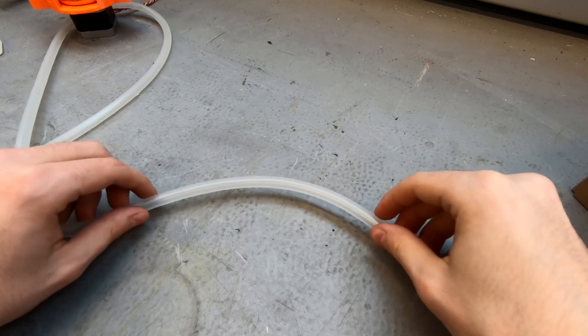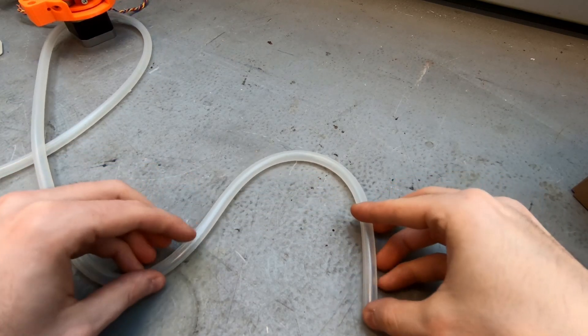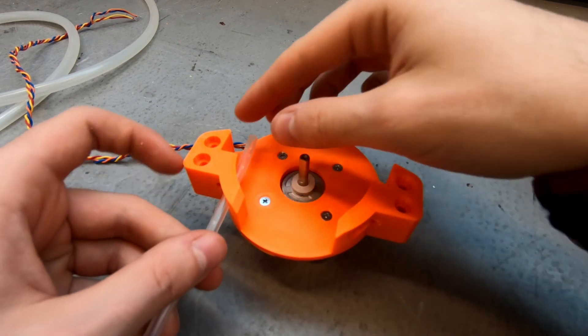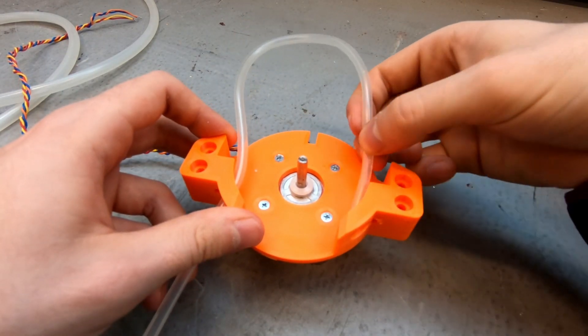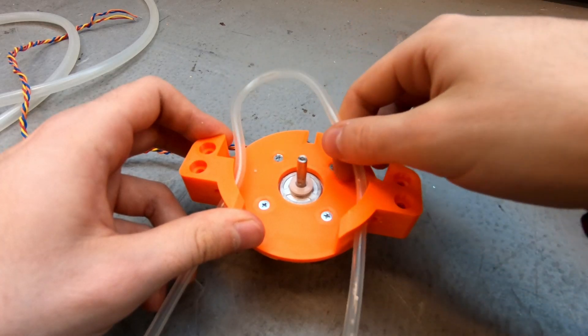Now if you just take the piece of tubing, bend it like that, and then you can pull it through this housing for the pump, like so.